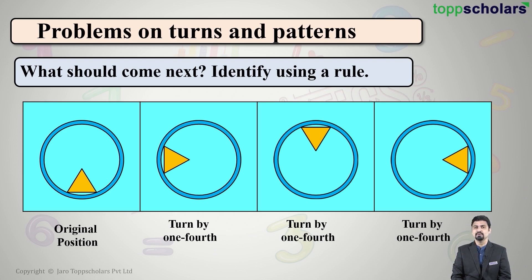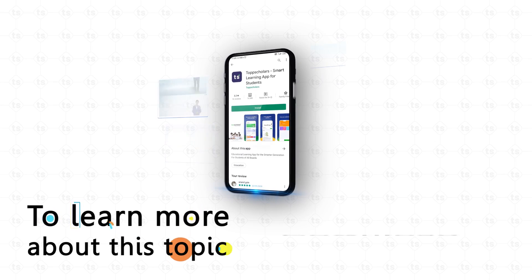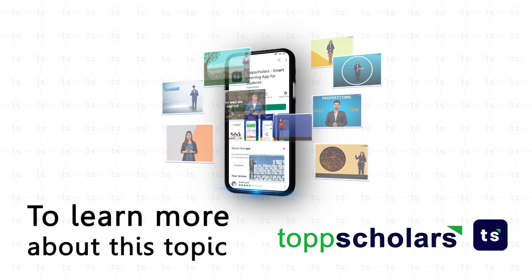Let's do it. So here the rule was turning one-fourth. In the next pattern also, you have to identify and write down the rule. To learn more about this topic, download Top Scholars app.